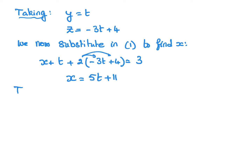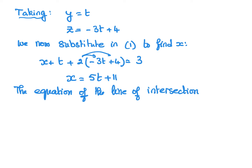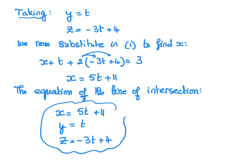Therefore, the equation of the line of intersection in parametric form is: x equals 5t plus 11, y equals t, and z equals minus 3t plus 4, where t is the parameter — any real number.